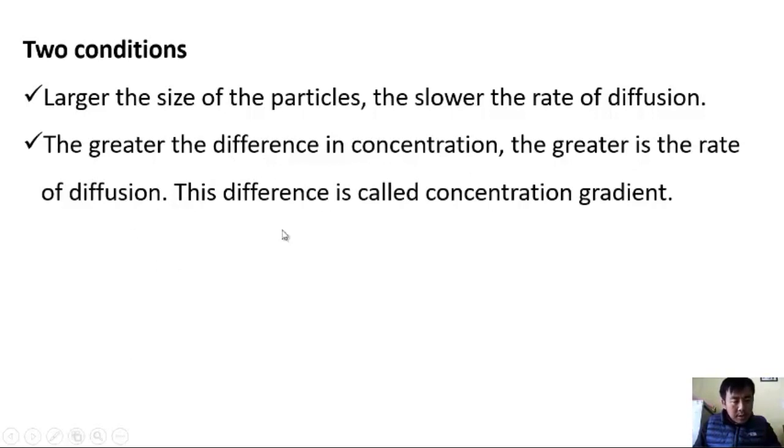That means if the substances are more this side and less this side, very less this side or no substances at all, the rate of diffusion will be faster. And if it's almost equal, if the substances in both the sides are almost equal, the rate of diffusion will be little slower. This difference is called concentration gradient.